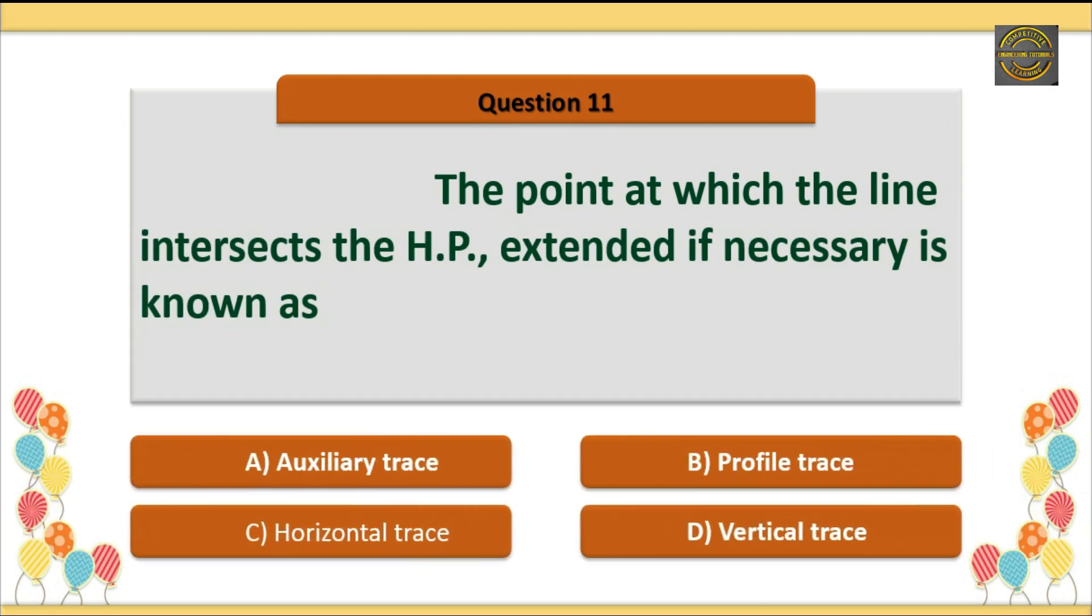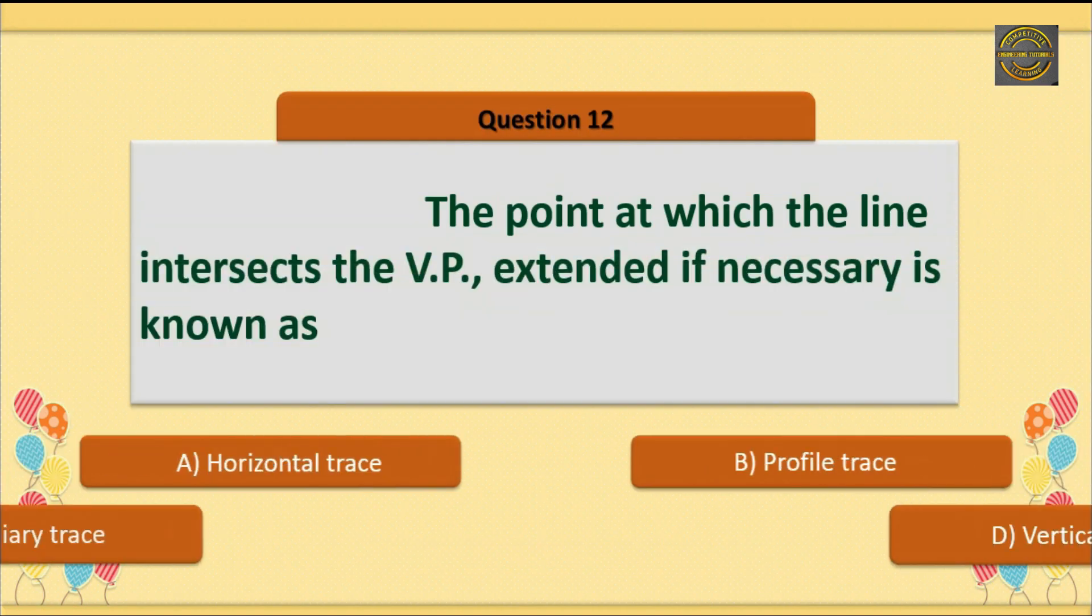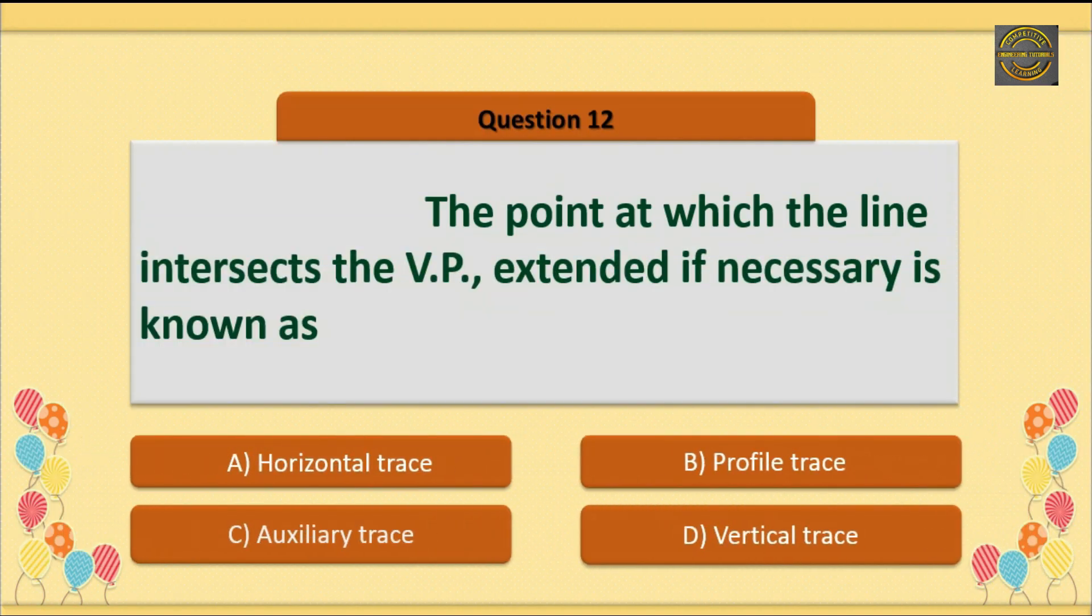Question 11: The point at which the line intersects the HP extended if necessary is known as? Option D is correct: Vertical trace. Question 12: The point at which the line intersects the HP extended if necessary is known as? Option D is correct: Vertical trace.